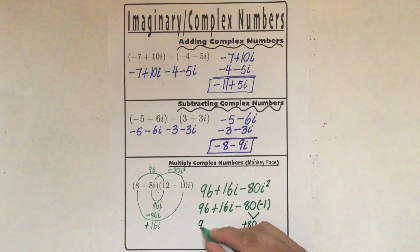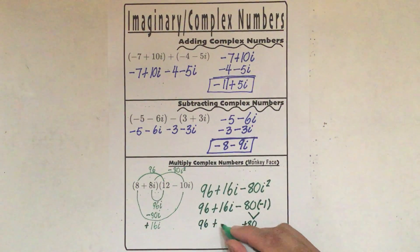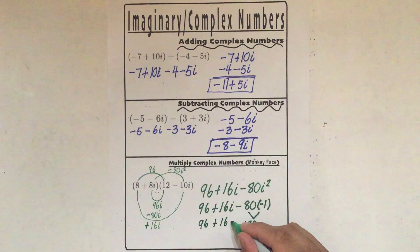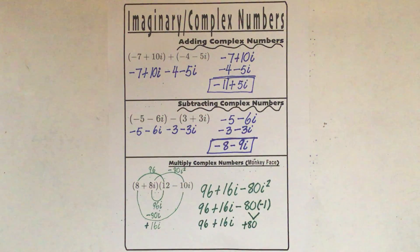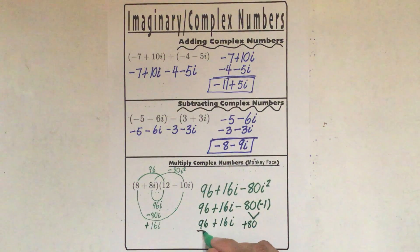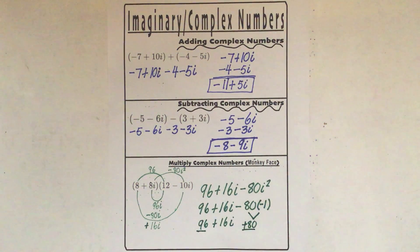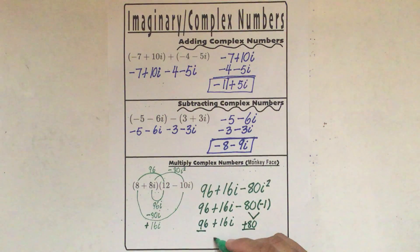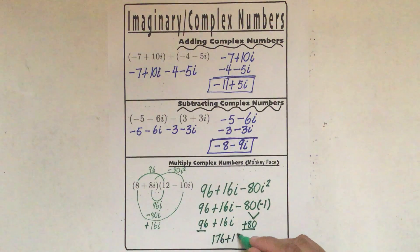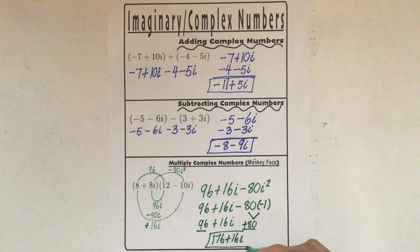Negative 80 times negative 1 is positive 80. And I'm going to bring down everything else: 96 plus 16i plus 80. Now 96 and 80 are both regular numbers, so I can add those two together. 96 plus 80 is 176, and I still have plus 16i. And there we go — that is our solution.